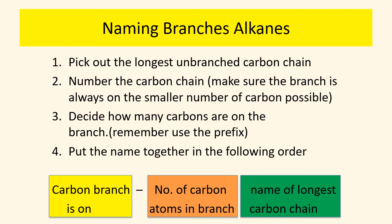Here are the rules for naming branched alkanes. Pick the longest unbranched carbon chain, then number that chain — making sure the branch is on the smallest carbon number possible, which means sometimes you have to count your chain backwards. Decide how many carbons are on the branch, then put the name together: write a number telling us which carbon the branch is on, then a dash, then the number of carbon atoms in the branch using a prefix (one carbon = methyl, two carbons = ethyl), then finally the name of the longest carbon chain (three carbons = propane, four = butane).